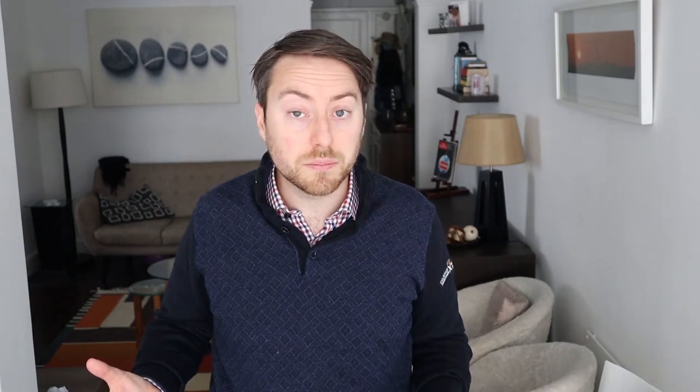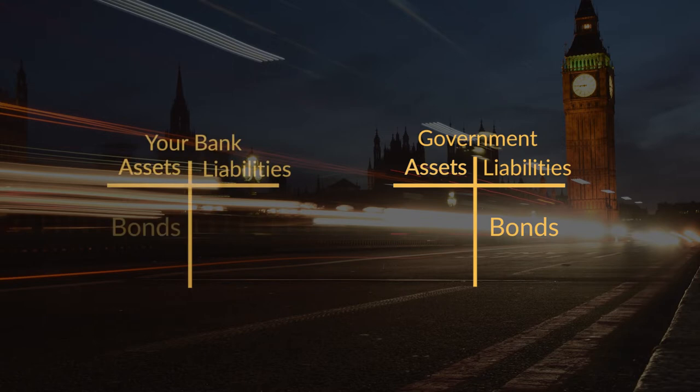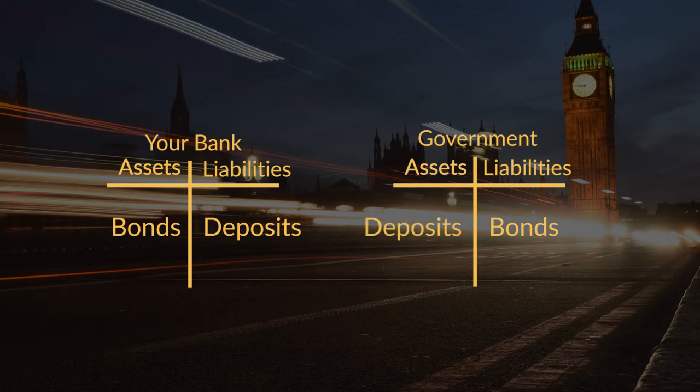How does this compare to how the government usually borrows money? Usually, the government goes to the bond market where it issues bonds. Investors, like private banks, will buy these bonds, and banks might even do so by issuing deposits. Note that in both cases the total amount of deposits, or money, held by the public is the same. And yes, private banks can create new money when they buy government debt. If you want to know more about that, check out my other video on this topic linked in the top right corner of the screen.